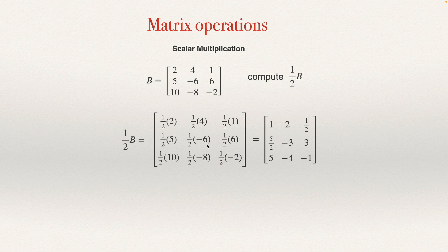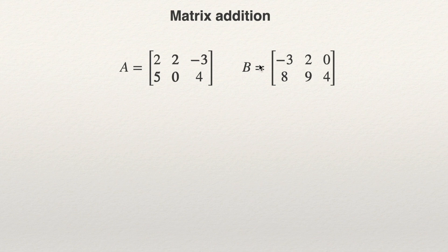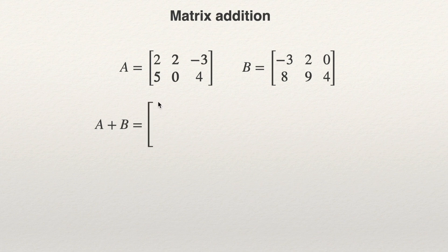Now I'm going to explain how to make the addition of matrices. If we are going to make an addition of matrices, the two matrices need to have the same size. For example, if this is a 2 by 3 matrix — 2 rows, 3 columns — I can add another matrix that has the same size. So we have two matrices of the same size, and somebody asks: how much is A plus B? It will be another matrix of the same size. You need to add the entries that are in the same position.